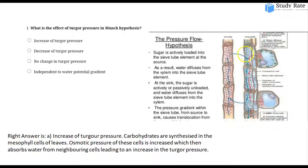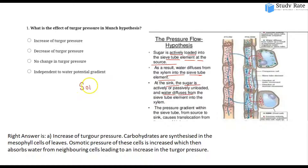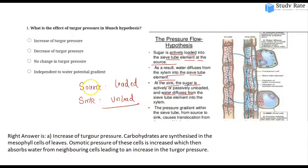In the Munch hypothesis, movement occurs from source to sink. Water movement: sugar is actively loaded into the sieve tube element at the source. As a result, water enters the sieve tube element. At the sink, sugar is actively unloaded. This relates to photosynthesis in mesophilic cells.